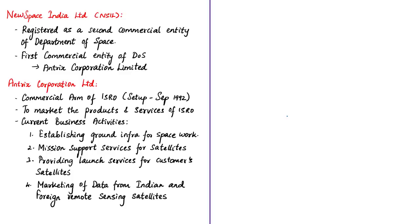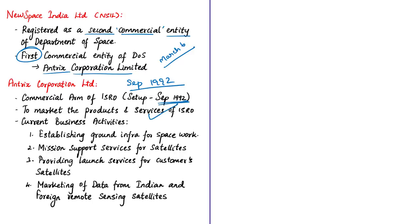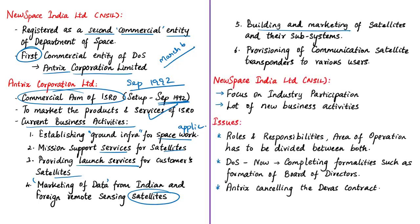On March 6, 2019, the Department of Space registered its second commercial entity. The first commercial entity of the Department of Space is Antrix Corporation Limited, set up in September 1992 to market the products and services of ISRO — it is the commercial arm of ISRO. Antrix Corporation's business activities include establishing ground infrastructure for space applications, providing mission support services for satellites, providing launch services for customer satellites, marketing data from Indian and foreign remote sensing satellites, building and marketing satellites and satellite subsystems, and provisioning of communication satellite transponders.